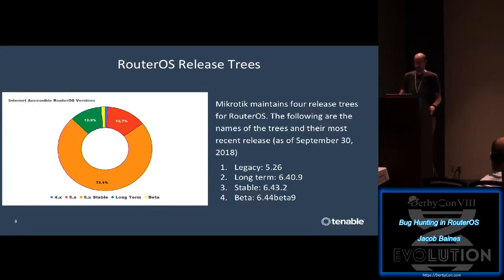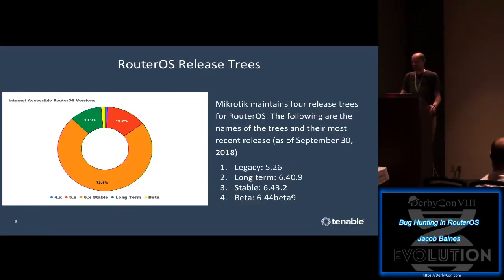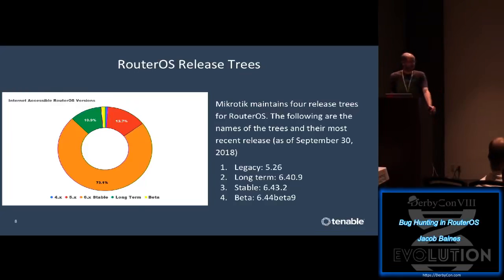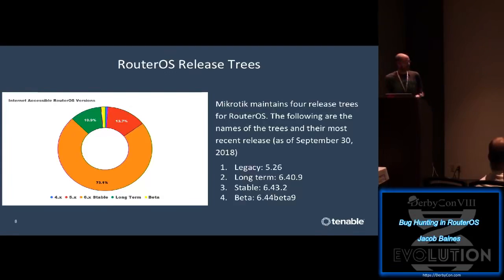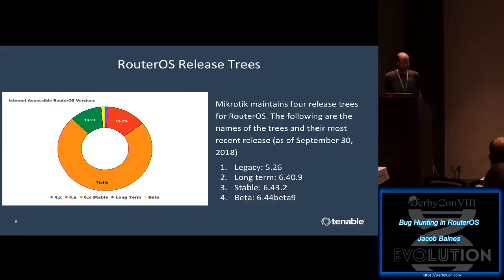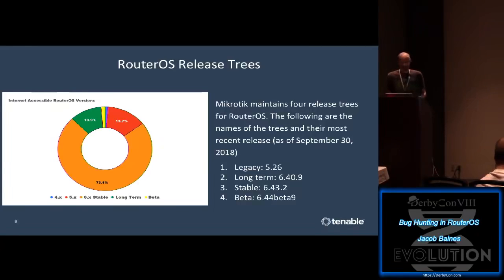MikroTik churns out RouterOS releases like nobody's business - I probably updated this slide ten times and just gave up last week. They keep four major branches going: legacy, long-term, stable, and beta. To get an idea of what's out there in the wild I hopped on Shodan and looked at FTP banners. Shodan isn't perfect and looking at FTP banners is a little unfair - an administrator that keeps FTP open to the world probably isn't patching - but it gives a basic idea: a whole lot of stable, nearly equal amounts of long-term and legacy, and measurably even some beta release candidate code.